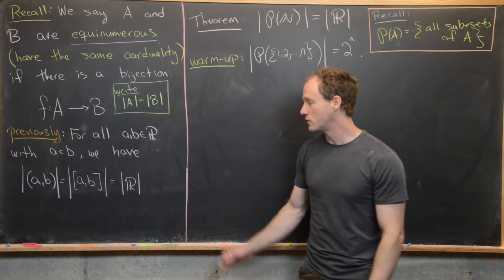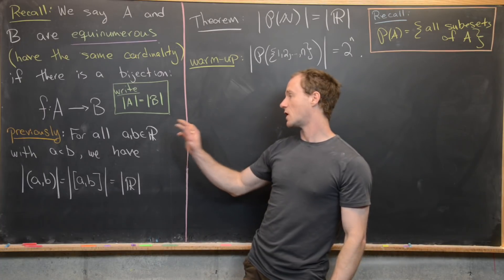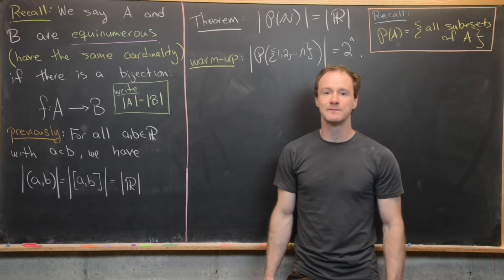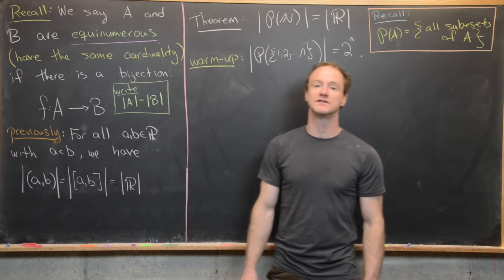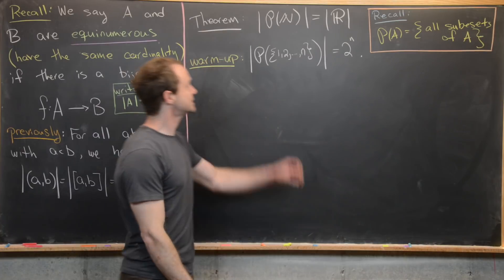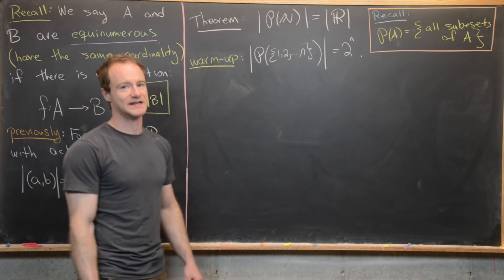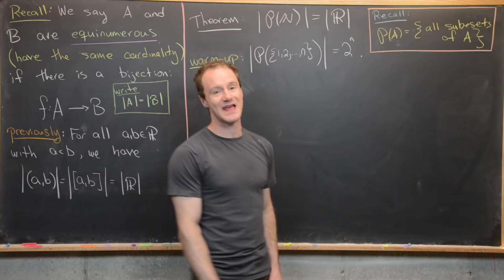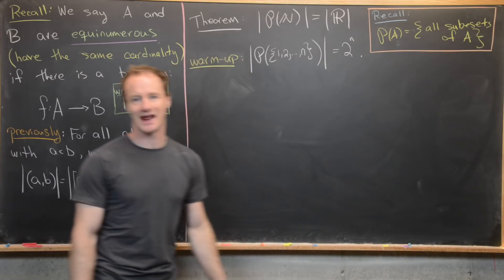Previously we proved the equinumerosity of three sets of real numbers defined by two real numbers A and B where A is less than B: the open interval (A, B) is equinumerous with the closed interval [A, B], which is equinumerous with the entire real line. Our goal for this video is to prove that the power set of the natural numbers is equinumerous with the real numbers. The power set of any set is the set of all subsets of that set, as written over here with set A.